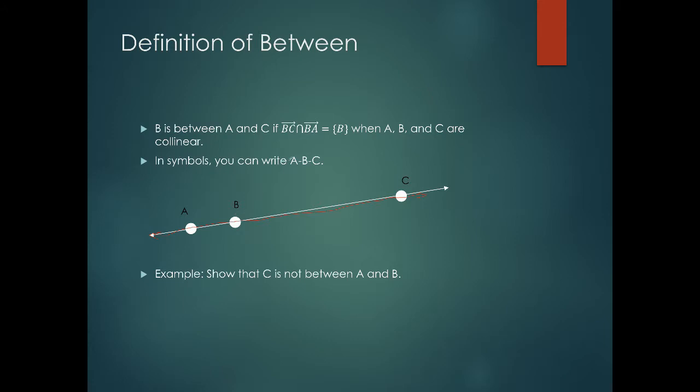Here are the symbols for betweenness: if we have A dash B dash C, this is saying B is between A and C, which means two things—they're collinear and B is the intersection of those two rays.